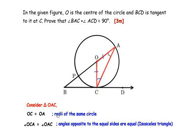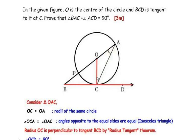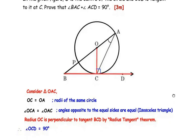Now let us focus on radius OC and tangent BCD. According to the radius-tangent theorem, the radius always makes a 90 degree angle at the point on the tangent which it touches. So radius OC makes an angle of 90 degrees with tangent BCD at point C. Therefore angle OCD is equal to 90 degrees.